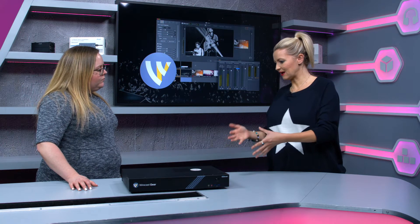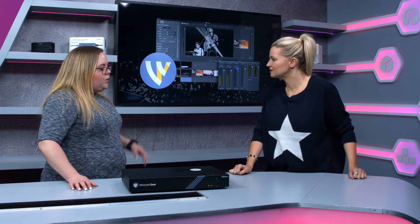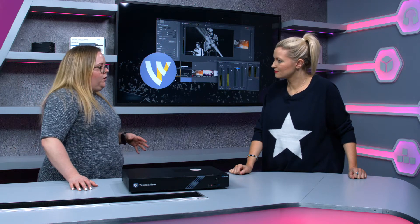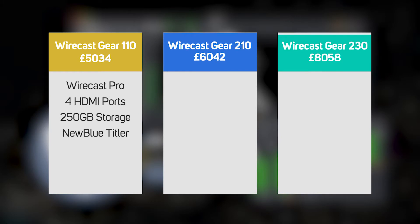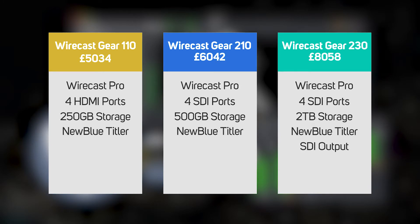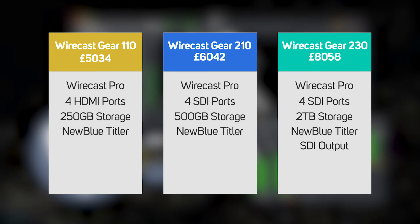Let's take a look at the box itself — how many inputs and outputs has it got? Wirecast isn't limited in how many inputs you can have, but with the Wirecast Gear, because it's a pre-configured system, we've got a capture card included. We've got three different models: the first has four HDMI inputs, the second has four SDI inputs, and the third has four SDIs that can be either inputs or outputs. The models also differ in internal storage — 250 gigabytes, 500 gigabytes, or up to 2 terabytes in the top model.